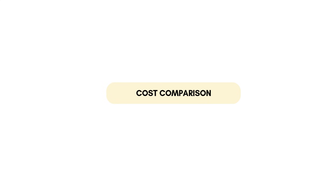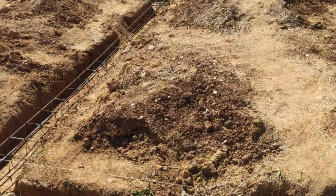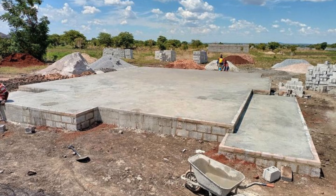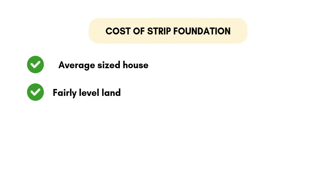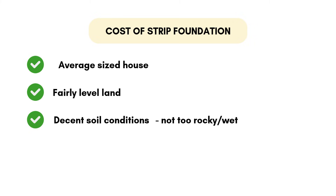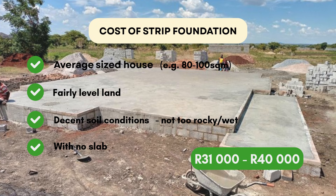In this video we're comparing the cost of two types of foundation. The first is the strip foundation. The builder marks out where the foundation will be, digs trenches, places reinforcing steel, and pours in the concrete. Foundation walls are then built, filled, and compacted — sometimes a slab is added on top, sometimes not. For an average-sized house of 80 to 100 square meters on fairly level land with decent soil, a traditional strip foundation with no slab can cost around 31,000 to 40,000 rand. It uses less concrete overall, which is why it's often cheaper.